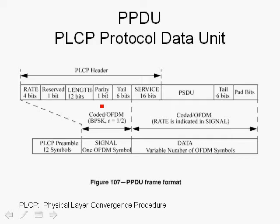It would have been much better if there was a CRC type of protection, even 8-bit, but they only use 1-bit parity. The tail bits are important — notice that there are 6 bits. In 802.11a, the convolutional encoder has a constraint length k equals 7, so the shift register is 6 bits (k minus 1), and in order to flush the shift register we need 6 zero bits.